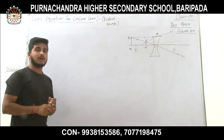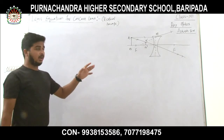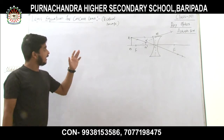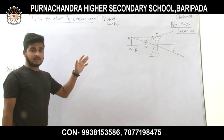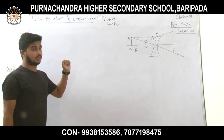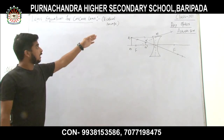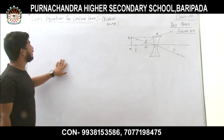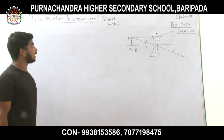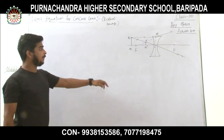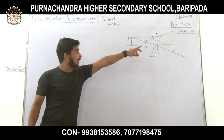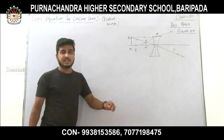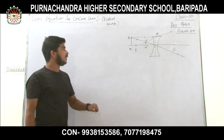Virtual image means the real refracted light rays do not actually intersect with each other. So the image will be virtual. Let's discuss the Lens Equation for a concave lens. I have taken a concave lens here, having C as its optical center and F as its focus.